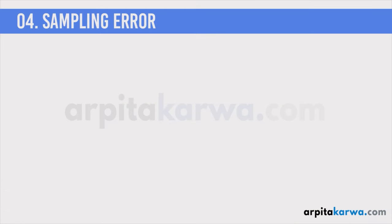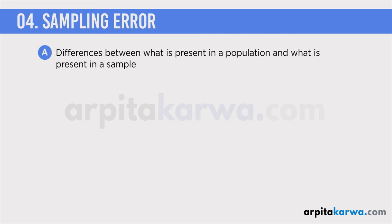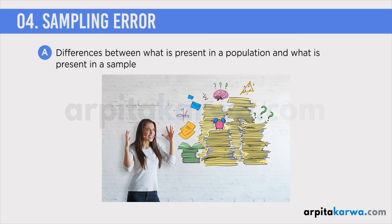So let us now talk about what sampling error is. We are all aware that sampling naturally cannot include every single individual in the population. And since we are not including every single element of the population, there are chances that errors can occur. Sampling error is basically the difference between what is present in the population and what is present in the sample. For example, out of 500 college students that Karan picks for his research, the majority are girls. Going back to that example, Karan wants to do research on how much stress college students face during finals.